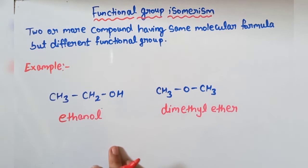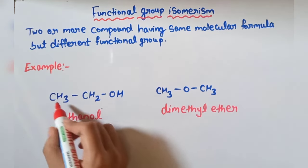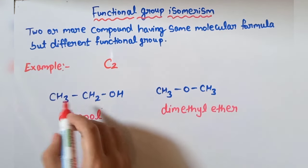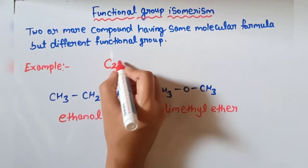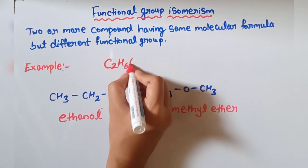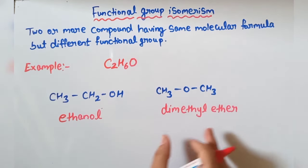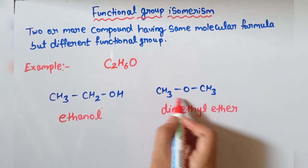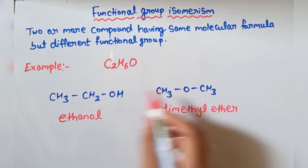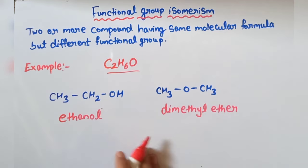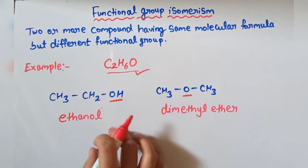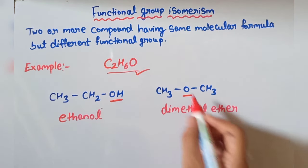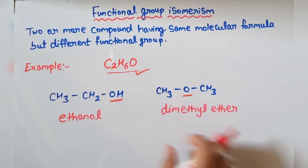See the example — here we have two compounds. For the first compound: two carbons, C2H6O. For the second compound: also two carbons, C2H6O — both compounds have the same molecular formula. But the functional group is different: in the first compound the functional group is OH, that is alcohol, and in the second compound the functional group is O, that is ether.